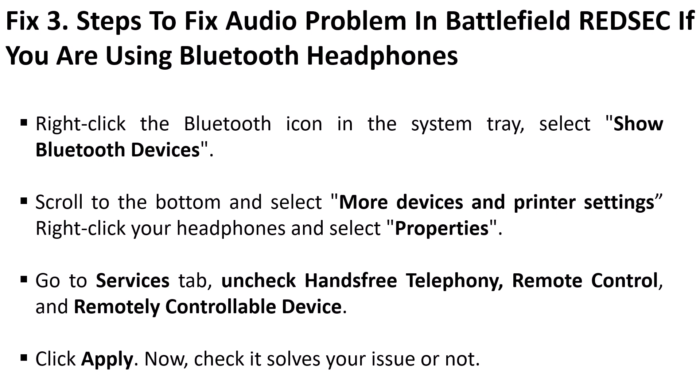Fix 3: Steps to fix audio problem in Battlefield if you are using Bluetooth headphones. Right-click the Bluetooth icon in the system tray, select Show Bluetooth Devices, scroll to the bottom and select More Devices and Printer Settings. Right-click your headphones and then select Properties. Now go to the Services tab, uncheck Hands-Free Telephony, Remote Control, and Remotely Controllable Device. Then click Apply. Now check if it solves your issue or not.